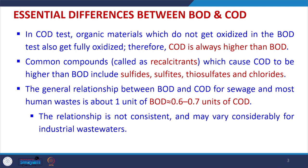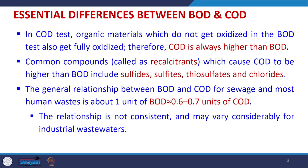Common recalcitrant compounds — those that resist biodegradation by microorganisms — cause COD to be higher than BOD. These recalcitrants include sulfides, thiosulfates, chlorides, etc. The general relationship between BOD and COD for sewage and most human waste is that 1 unit of BOD is approximately equal to 0.6 or 0.7 units of COD.